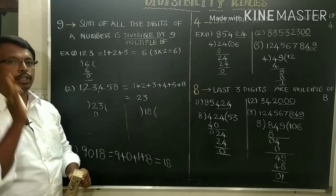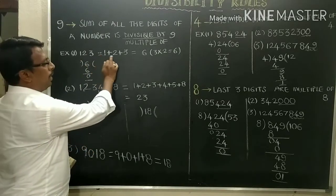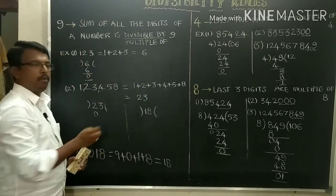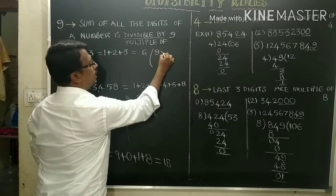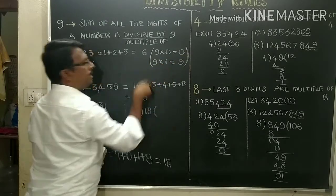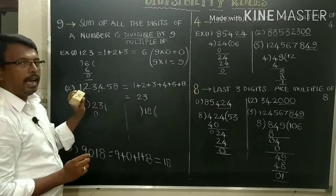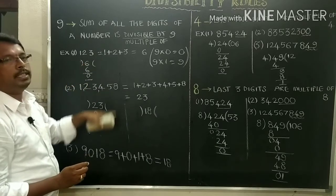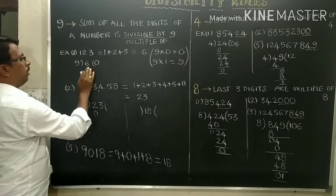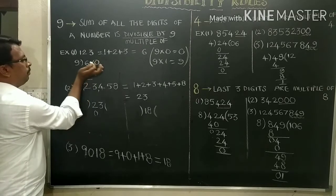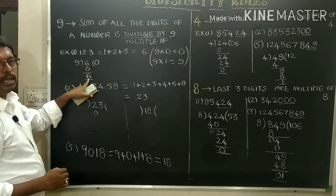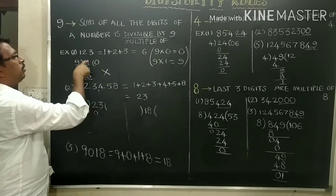For example, same example 123: 1 plus 2 plus 3 equals 6. 6 is not in the 9 times table — 9 ones are 9, there is no 6 in the 9 table. That's why 123 is not divisible by 9. In another way, when we divide 123 by 9 we get 6 as remainder, so it can't be divisible by 9.